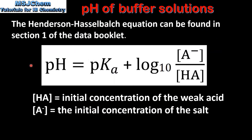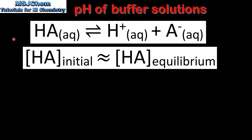To calculate the pH of a buffer solution we use the Henderson-Hasselbalch equation, which can be found in section 1 of the data booklet. The pH of a buffer solution is equal to the pKa plus the log of the concentration of the salt divided by the concentration of the weak acid.